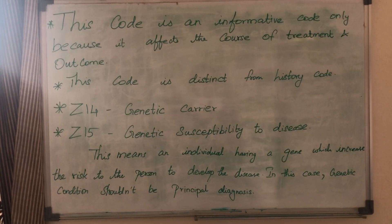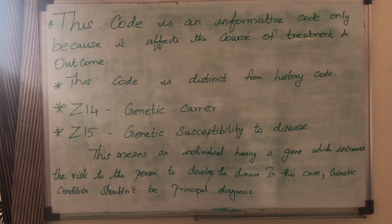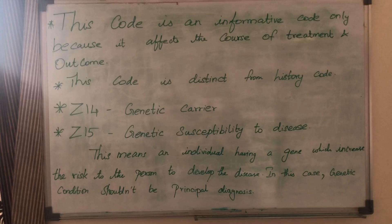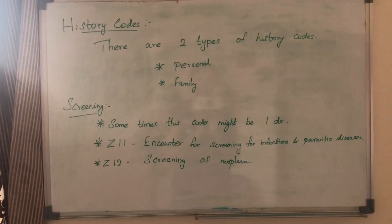In this section, history codes and status codes are used. Z14 is the genetic carrier code. Z15 is the genetic susceptibility to disease code — meaning an individual has a gene that indicates they can develop the disease in the future. For Z15, there are chances to develop the disease. In this case, the current condition of the patient is the principal diagnosis, and Z15 is used as the secondary diagnosis.